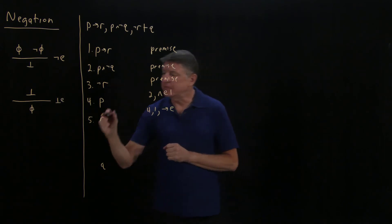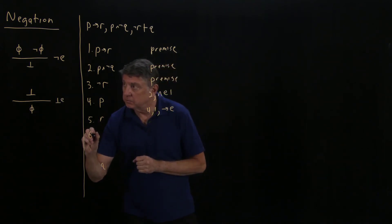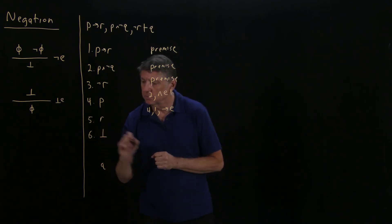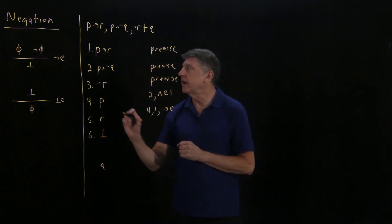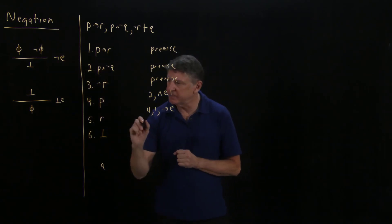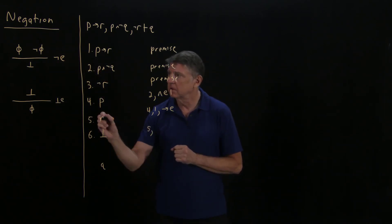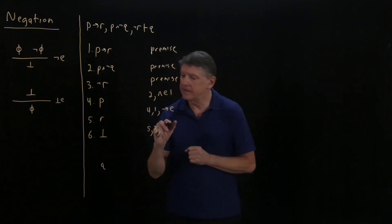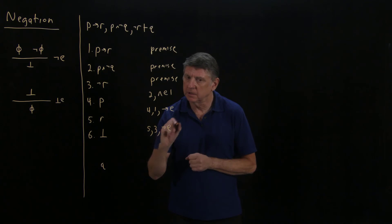Well, from these, I can now use negation elimination to conclude the bottom symbol. And I do that in this application by saying I apply line five and line three, and I'm using negation elimination.